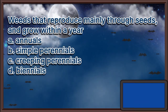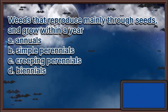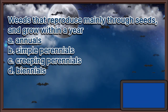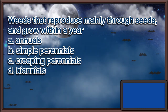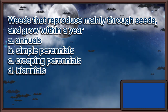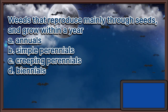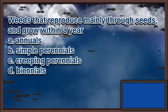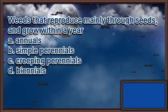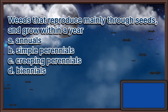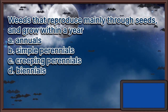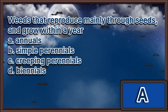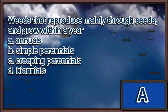Weeds that reproduce mainly through seeds and grow within a year. A. Annuals. B. Simple perennials. C. Creeping perennials. D. Biennials. The answer is letter A.